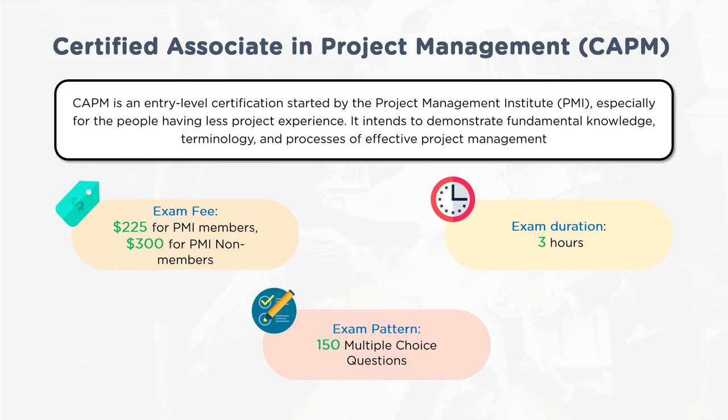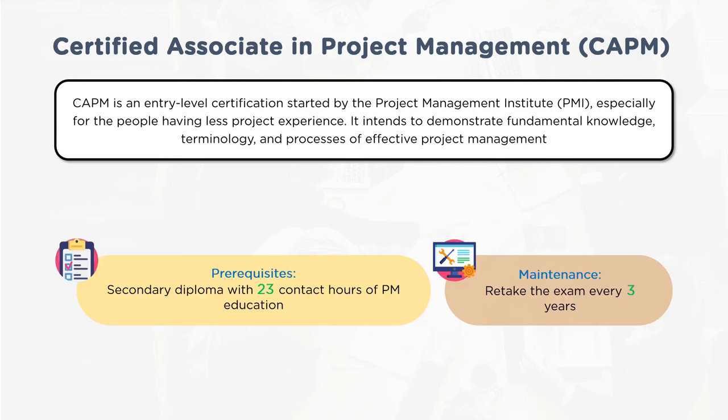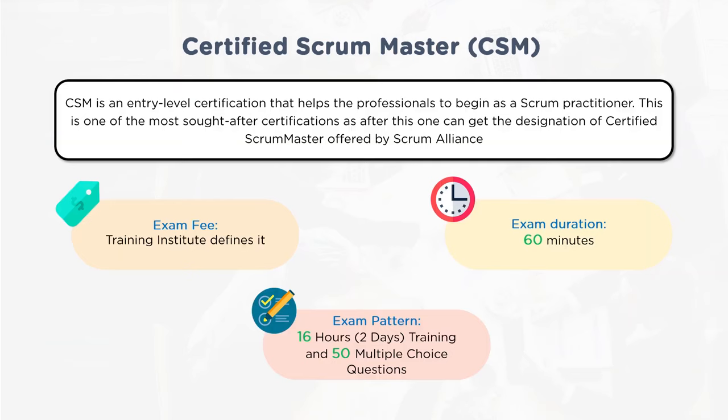CAPM is an entry-level PMI certification for people with less project experience. It demonstrates fundamental knowledge, terminology, and processes of effective project management. Exam fee is $225 for PMI members and $300 for non-members. Duration is 3 hours with 150 multiple-choice questions. Prerequisites are a secondary diploma with 23 contact hours of PM education — no project experience required. Maintenance requires retaking the examination every 3 years.